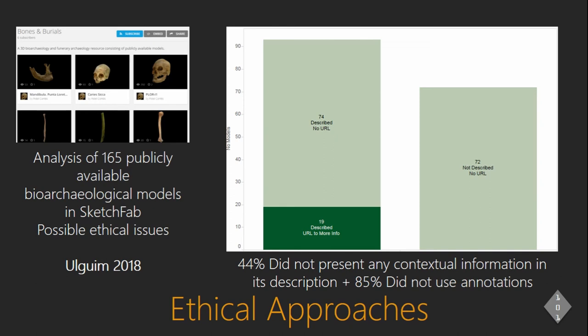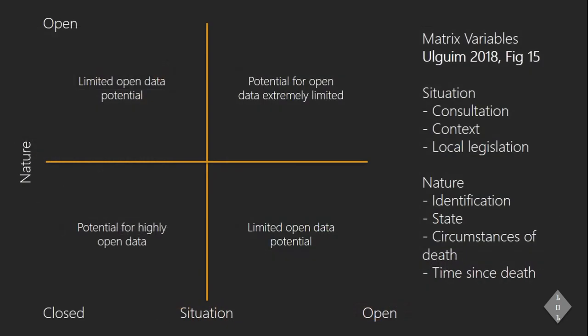To attempt to address these issues, I created a matrix for the assessment of how and when digital representations of the dead should be displayed online, which is shared in my color spectrum. These variables for assessment fall into broad categories. As we can see, firstly, there are the situational variables, which include consultation, local legislation, and contextual discretion. On the other axis, there are the nature-related variables: the identification and state of the individual, circumstances of death, and time since death. Beyond the ethical challenges regarding the sharing of data, archaeologists studying both analog and digital dead now also face new challenges regarding the persistence of technology.